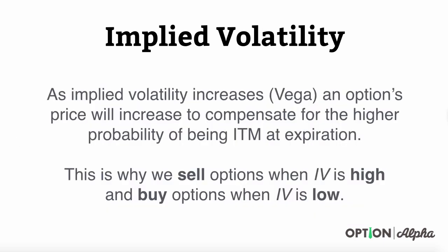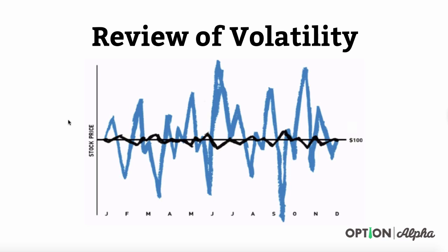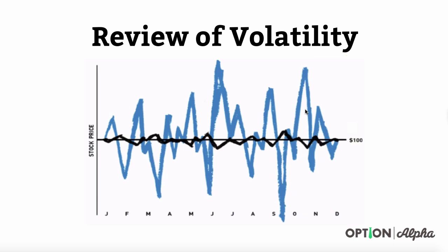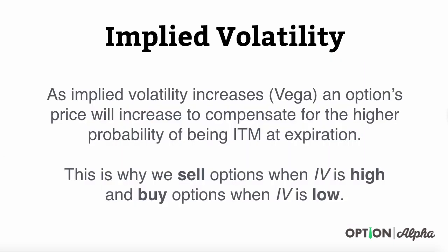As implied volatility increases — what's commonly called vega in option pricing — an option's price will increase as well to compensate for the higher probability of being in the money at expiration. As a stock starts to make more frequent moves, that option's price is going to increase because options at the further extremes have an opportunity to be in the money at expiration. This is why we specifically suggest that you sell options when implied volatility is high, because option pricing is going to be very expensive and rich. This is also why we suggest that you buy options when implied volatility is low, because option prices are generally going to be really low and have the propensity to increase in the future.